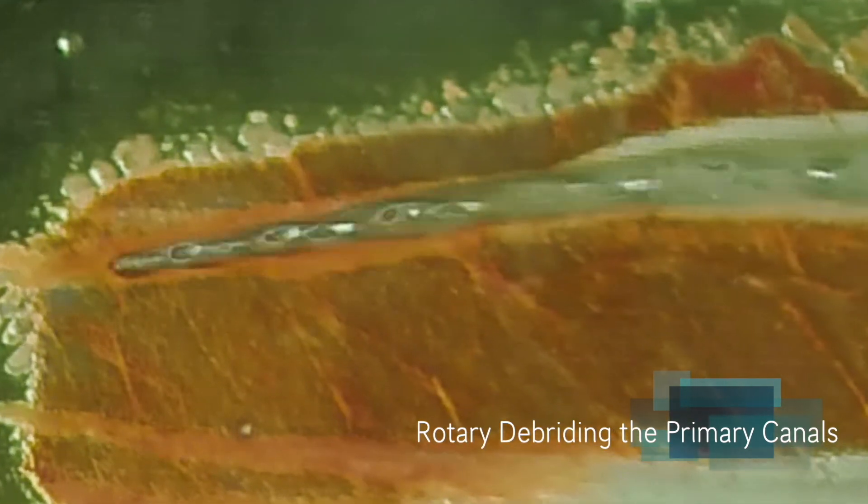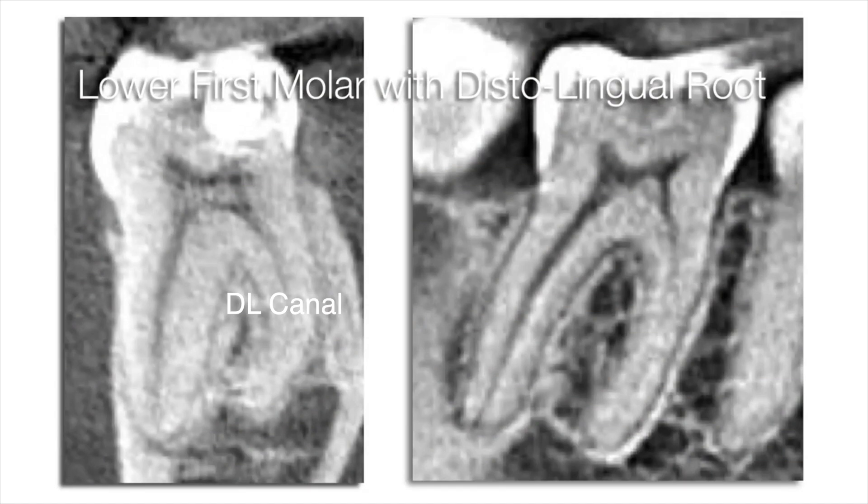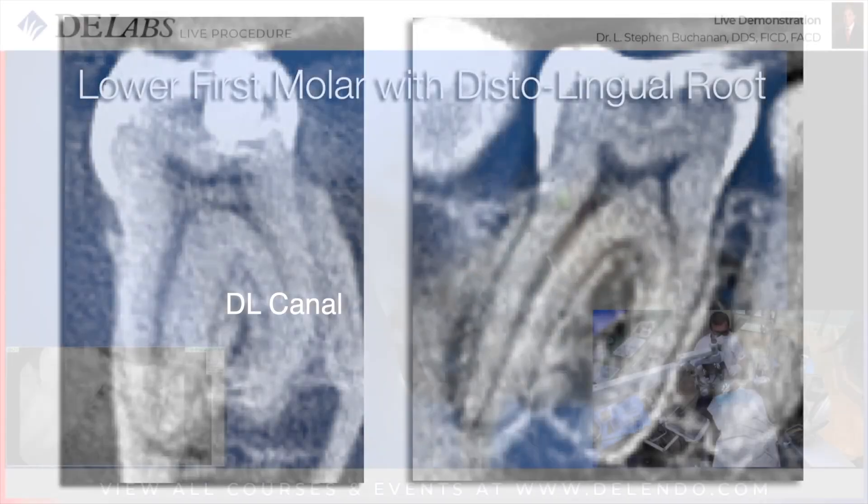That's very interesting because most of us think that rotary files are not the best instrument to take to length as the first instrument. This was a very challenging case due to the severe curvature of the distal lingual canal in its lower first molar, rare.